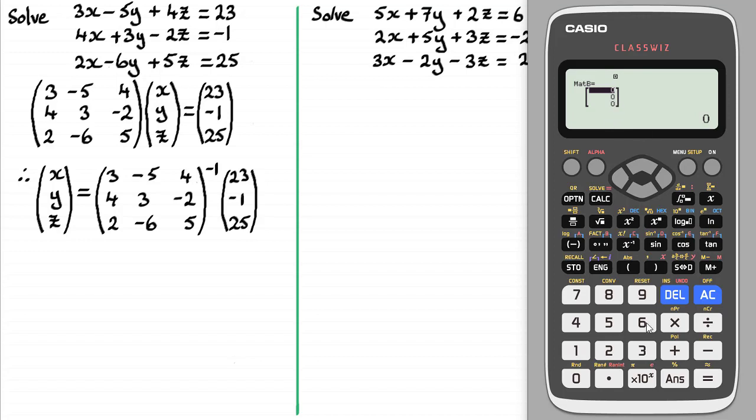And again, enter those values: 23 in, -1 in, and finally 25. So we've got those values in.